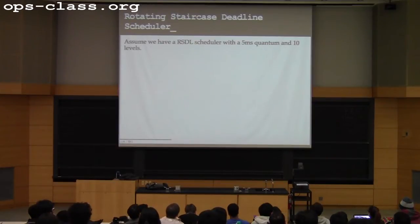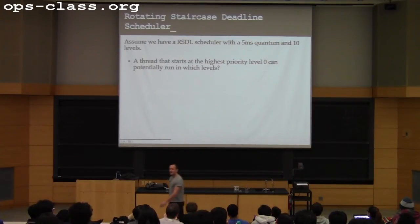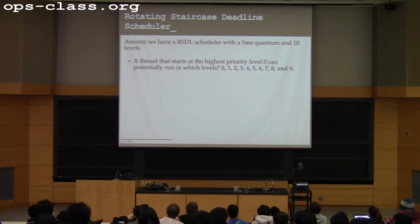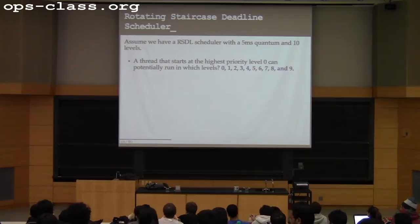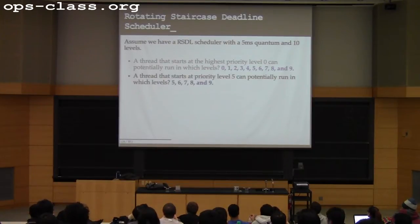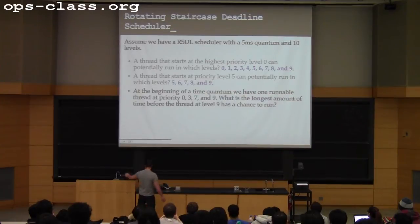Let's look at a couple of questions about RSDL. Say I have an RSDL scheduler with 10 run levels and a 5 millisecond quantum. If I start at the highest priority level 0, what levels will this thread potentially have the chance to run in? All of them — levels 0 through 9. It's not guaranteed to run at all levels, but if it continues to exhaust its quantum at a particular level, it will be moved down. The same applies starting at level 5: it can run at that level and all levels below.